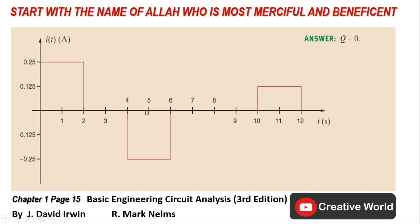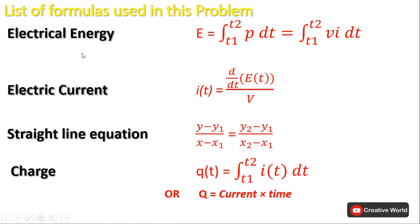I have plotted and sketched the correct answer in the proceeding slides. For solving this scenario, I would like to share the formulas we will be using. The first formula is electrical energy E with respect to power, and with respect to voltage and current. Since we need to calculate the current, we will use this energy formula. The second is electric current, derived by taking the derivative of energy on both sides and dividing by voltage.